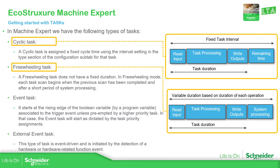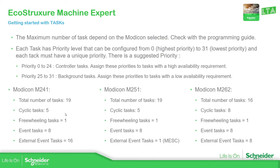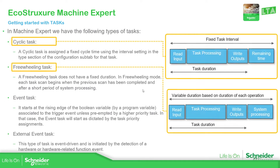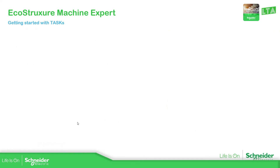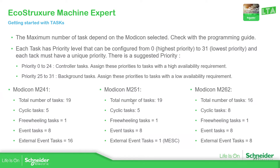We have four main different types of tasks: the cyclic task, freewheeling task, event task, and external event task. For each PLC, the amount of each task type that we can have is shown here. These values come from the product manual that you can find in the Machine Expert online help.